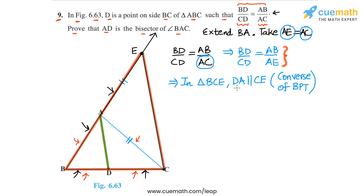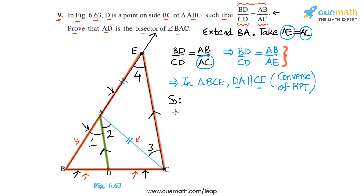From this equality we can conclude that in triangle BCE, DA is parallel to CE by the converse of the basic proportionality theorem. Now let's see what DA parallel to CE means for the various angles in the figure. Let's mark angle 1 and angle 2, keeping in mind that our goal is to show angle 1 equals angle 2, which proves AD bisects angle BAC.